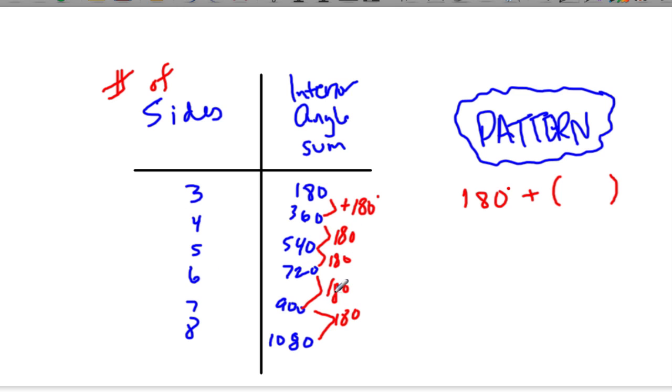For seven sides, we add one, two, three, four 180s to get 900. And for eight, we get one, two, three, four, five 180s. So this is the amount of 180s added each time we go up. Well, there are no 180s added to three, it's just 180 degrees. But then we add one 180 and we get 360. Then we add two 180s and three and four and five.